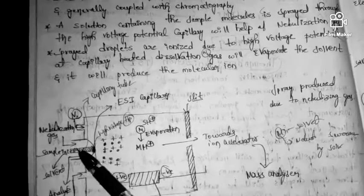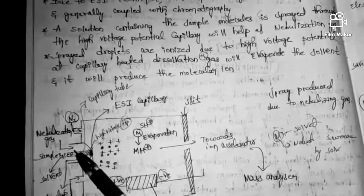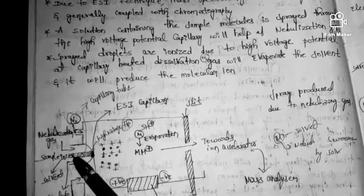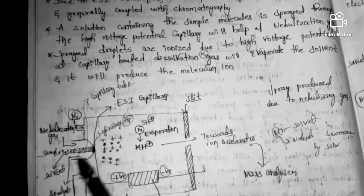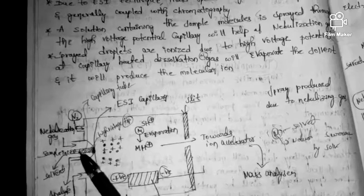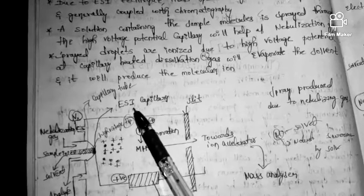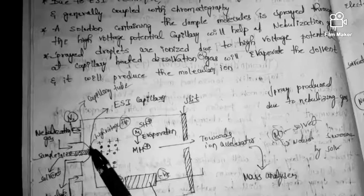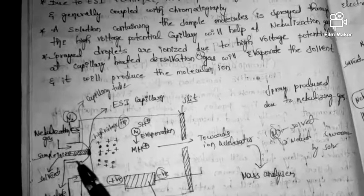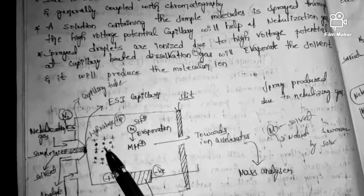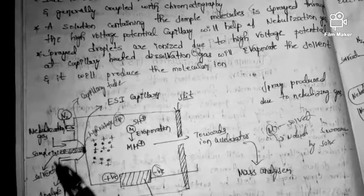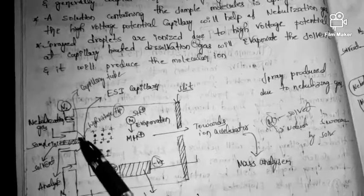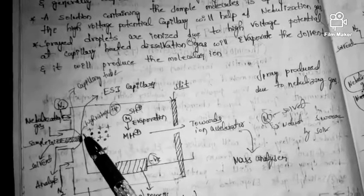The solution containing the sample molecules is sprayed through the electrospray ionization capillary tube. These sprayed droplets are then ionized. This ionization is due to the high voltage potential at the capillary tip.